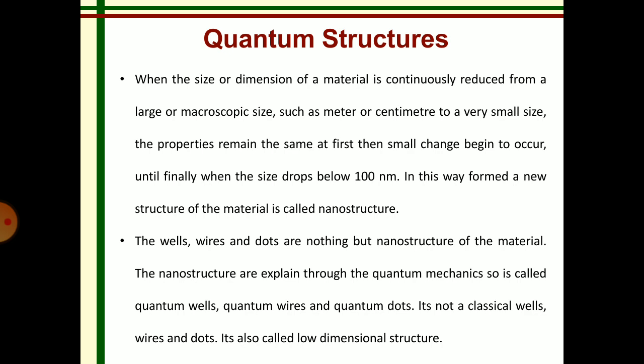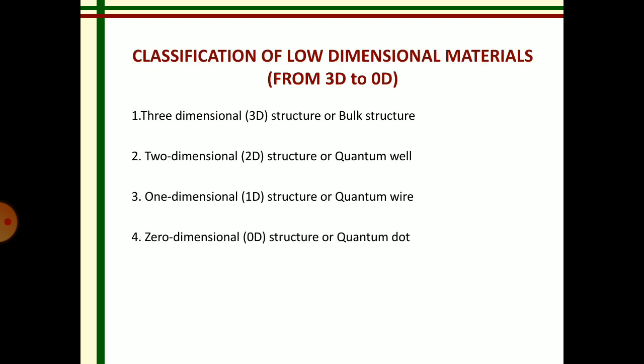The nanostructures are explained through quantum mechanics, so it is called quantum wells, quantum wires, and quantum dots. Nanostructure materials are also known as low dimensional structure materials. Classification of low dimensional materials: there are four different types.